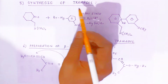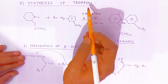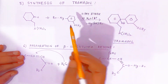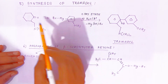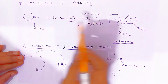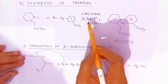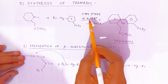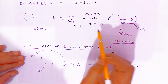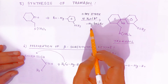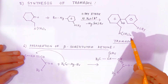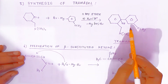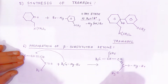Synthesis of tramadol: the Grignard reagent combines with the reactant in presence of dry ether. On acidic hydrolysis, magnesium hydroxide bromide is eliminated and tramadol is obtained. This is the structure of tramadol.